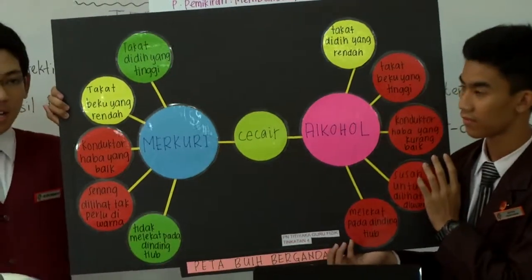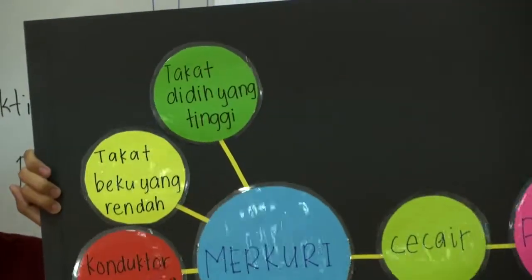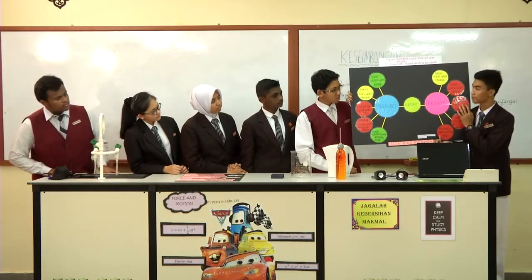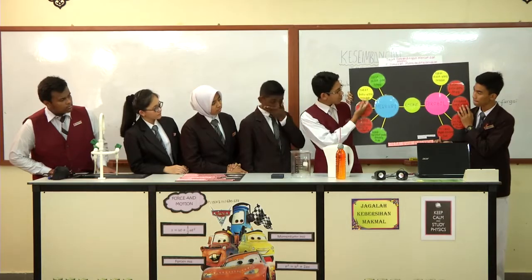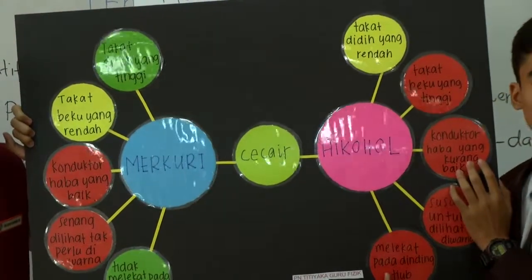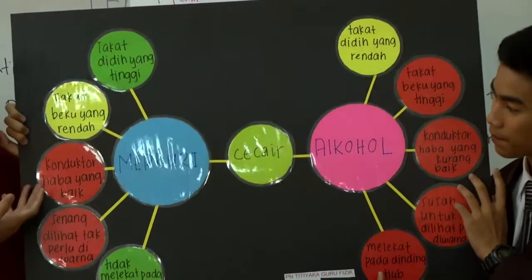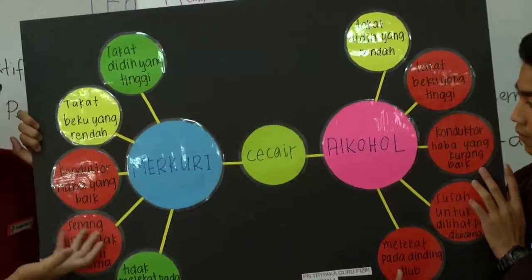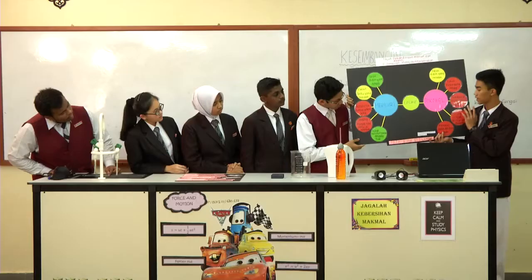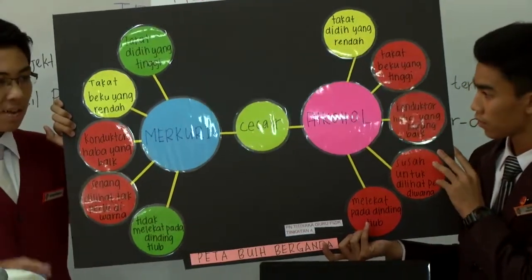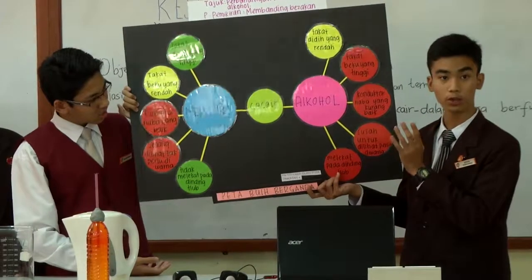Mercury digunakan dalam termometer kerana takat didihnya yang tinggi, iaitu melebihi 300 darjah Celsius. Manakala alkohol pula mempunyai takat didih yang rendah iaitu 79 darjah Celsius. Mercury juga mempunyai takat beku yang rendah iaitu negatif 39 darjah Celsius, manakala alkohol mempunyai takat beku yang tinggi iaitu negatif 115 darjah Celsius. Mercury merupakan konduktor haba yang sangat baik, manakala alkohol merupakan konduktor haba yang kurang baik. Sifat Mercury ialah legap dan tidak perlu diwarna, manakala alkohol susah untuk dilihat jadi ia perlu diwarnai.